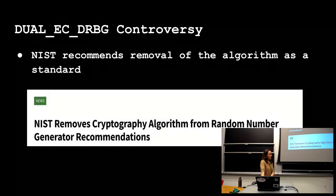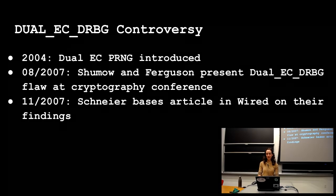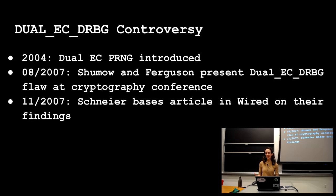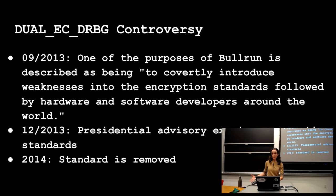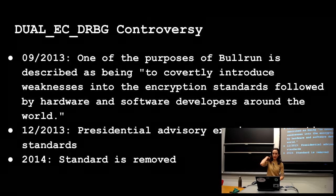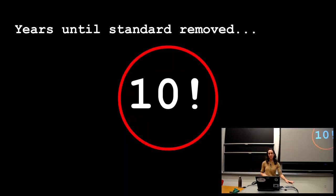So to go over this timeline again, the algorithm was first introduced in 2004. Three years later, at this conference, they present the details of this back door to it. Later that year, Bruce Schneier publishes about it in Wired Magazine. Six years later, it comes up again with the release of the Snowden papers. And then finally, later that year, there's a presidential advisory committee assigned to examine this standard. And then it gets removed. So from the time that it was introduced to the time that it was removed, 10 years, an entire decade passed.